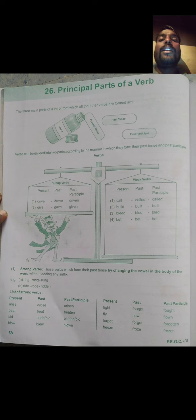The three main parts of a verb from which all the other verbs are formed are: Dear students, we have three kinds of verbs in English. Those verbs formed in three tenses. What are those? First one, present tense. Second one, past tense. Third one, past participle.